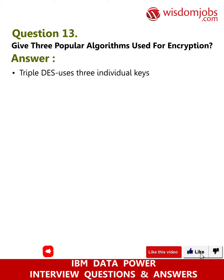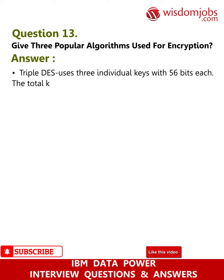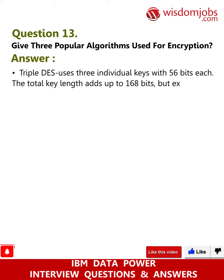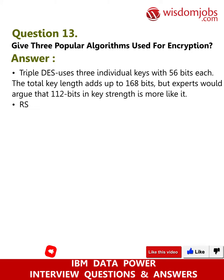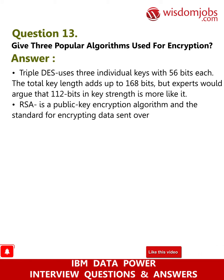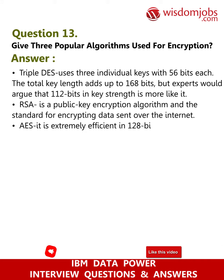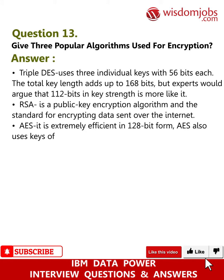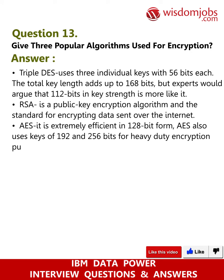Question 13: Give three popular algorithms used for encryption. Answer: Triple DES — uses three individual keys with 56 bits each; the total key length adds up to 168 bits, though experts argue that 112 bits in key strength is more accurate. RSA — a public key encryption algorithm and the standard for encrypting data sent over the internet. AES — extremely efficient in 128-bit form; also uses keys of 192 and 256 bits for heavy-duty encryption purposes.